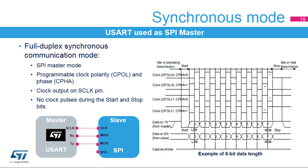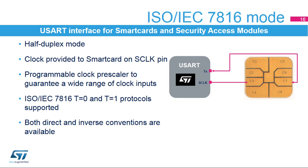The USART can also communicate synchronously. It can operate as an SPI in master mode with programmable clock polarity or CPOL and phase CPHA. The clock is output on the SCLK pin. No clock pulses are provided during the start and stop bits. The USART can be used in smart card mode based on half-duplex communication. The clock is output to the smart card on the SCLK pin. It supports the T=0 protocol and provides many features allowing support for T=1. Both direct and inverse conventions are supported directly by hardware.